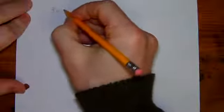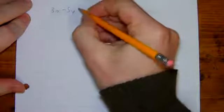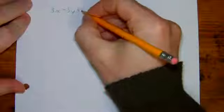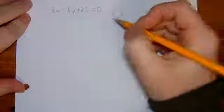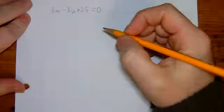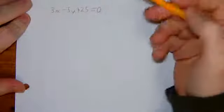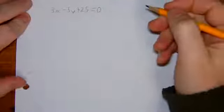So the idea is what if I have an equation like 3x minus 5y plus 25 equals 0. So this equation is in standard form, but I might have a question like, what is the slope and y-intercept of this equation?